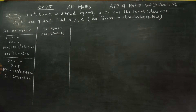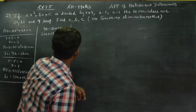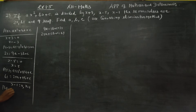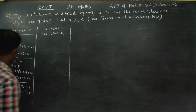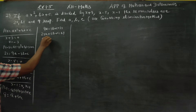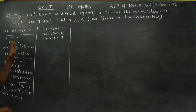Now entering the third equation. For x-1=0, x=1. Substituting: p(1) = a(1²) + b(1) + c. The third remainder is 9, giving us the third equation: a + b + c = 9.